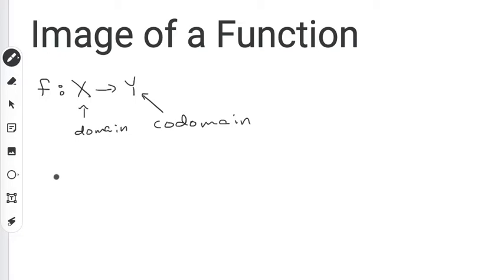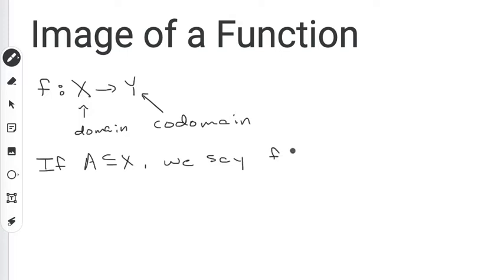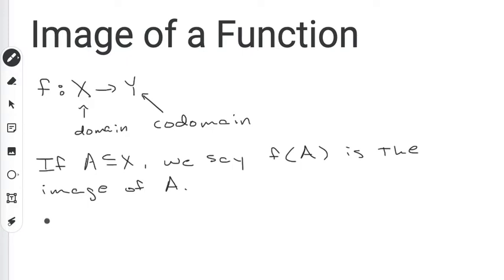Now sometimes when we talk about functions, we'll talk about images of functions. We can talk about images of a subset of the domain. So if a is a subset of x, we say that f of a is the image of a. So f of a is going to be the set of all images of elements from a.